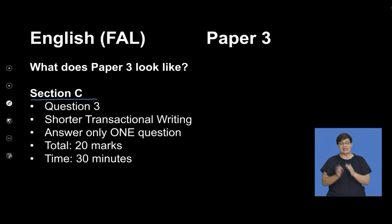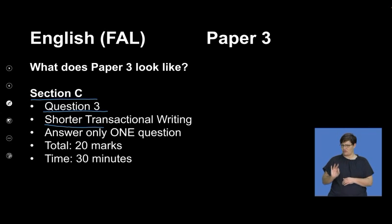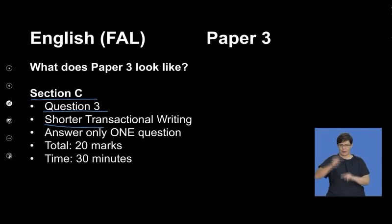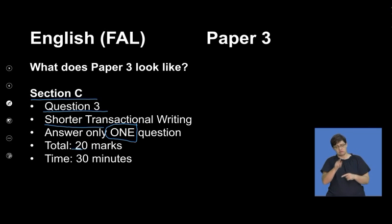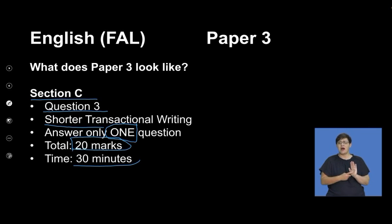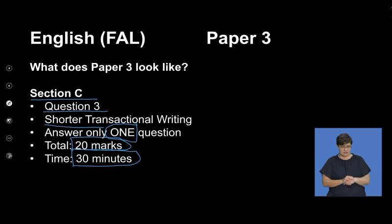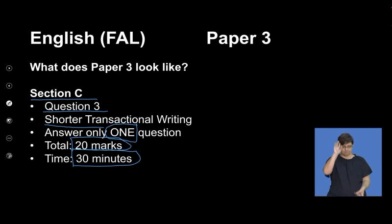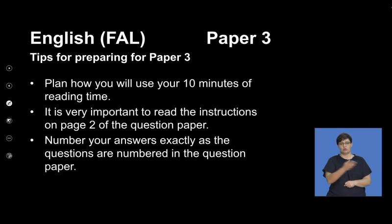Section C is question 3. It's your shorter transactional writing text. You only answer one question again — 20 marks allocated, 30 minutes for this section. If you allocate your time properly, we will obviously get the two and a half hours for this paper.